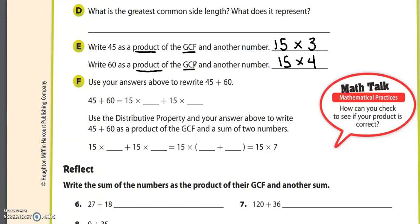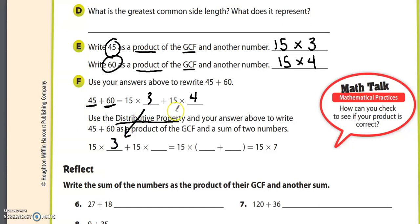Question F says: use your answers above to rewrite 45 plus 60. Since 45 is on the left, we write 15 times 3, because 15 times 3 is 45. And since 60 is on the right, we write 15 times 4. Then, using the distributive property, write 45 plus 60 as a product of the GCF and a sum of two numbers: 15 times 3 plus 15 times 4 equals 15 times 3 plus 4.